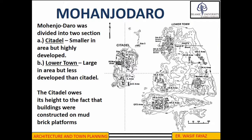The town of Mohenjo-daro was divided into two sections: the Citadel and the Lower Town. The Citadel was smaller in area but was very highly developed, while the Lower Town was larger in area but less developed. The Citadel included numerous structures such as the Great Bath and monasteries, and was built on raised ground due to buildings constructed on brick platforms.